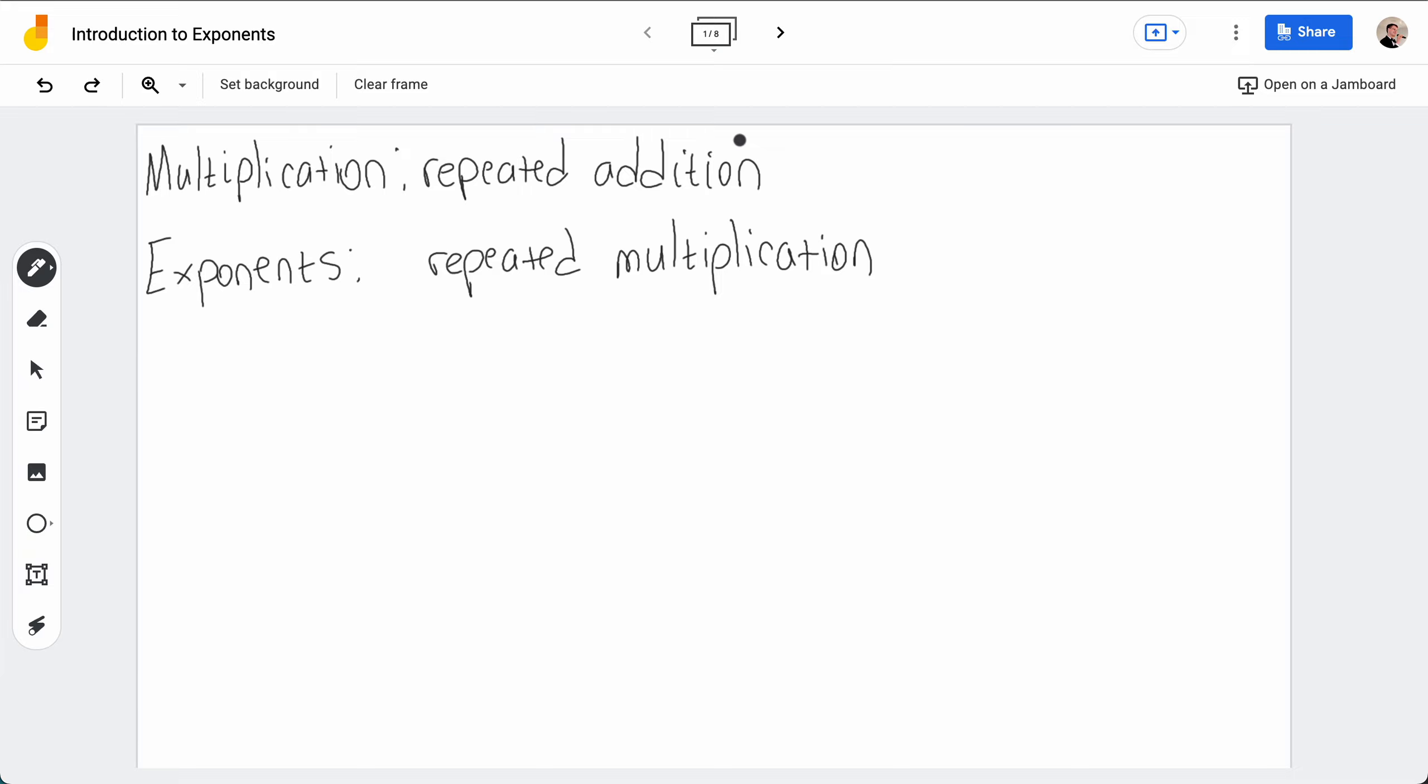We're going to talk about exponents, which are an extension of multiplication. Whereas multiplication is repeated addition, if I do 2 times 3, we know that this means I'm going to add 2 to itself 3 times. So I'm going to do 2 plus 2 plus 2.